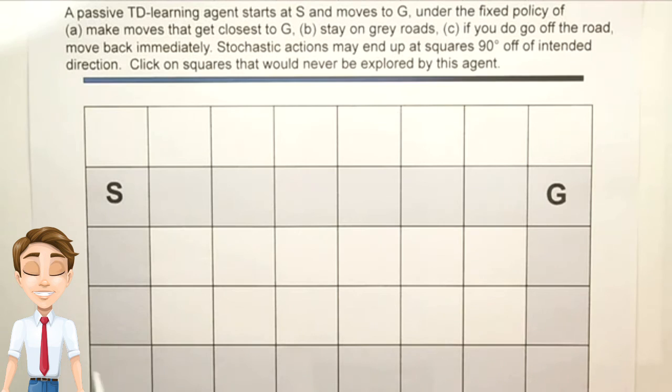but the bottom two rows would never be explored under any conditions, no matter what happens stochastically, as long as the agent is following this fixed policy.